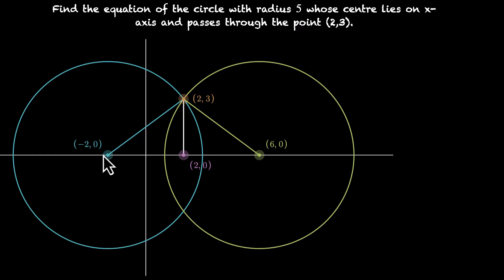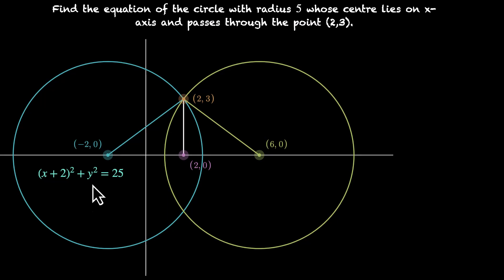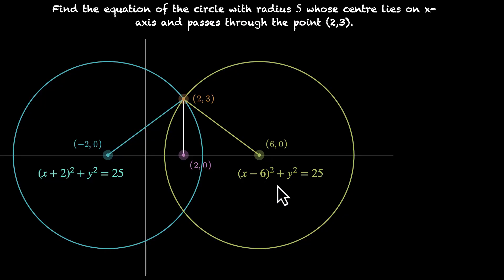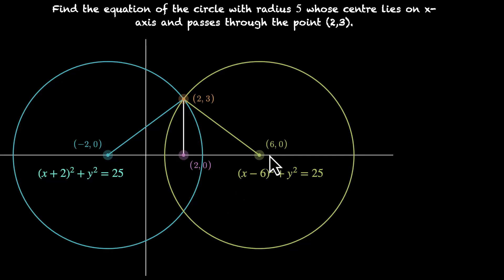We have the centers and already know the radius, so we can write the equations: x plus 2 squared plus y squared equals 25 for center minus 2 comma 0, and x minus 6 squared plus y squared equals 25 for center 6 comma 0. We have not one but two circles satisfying the condition.